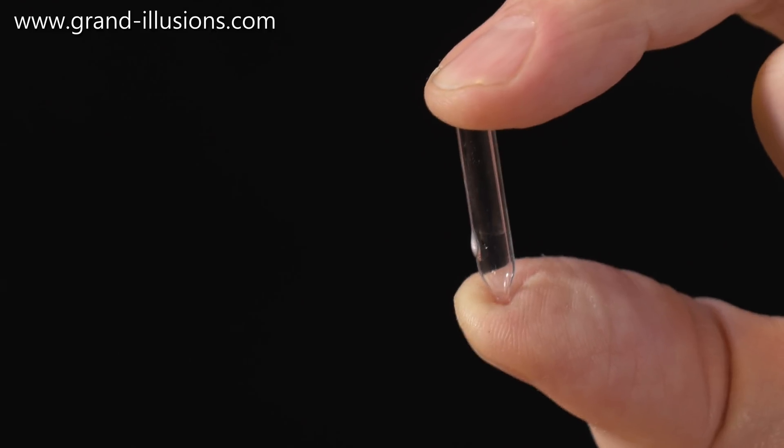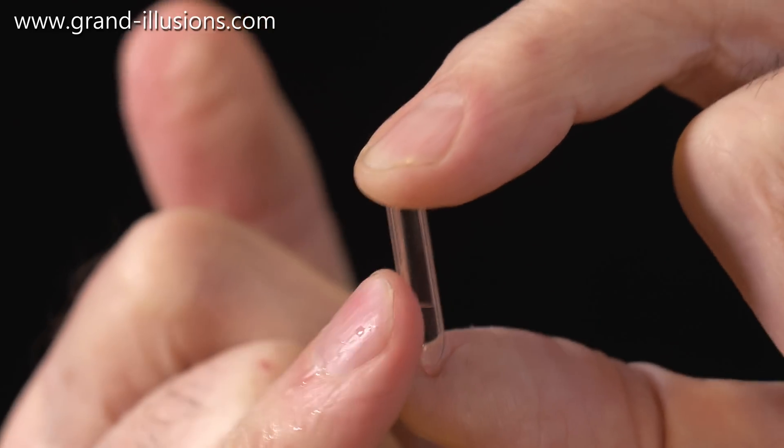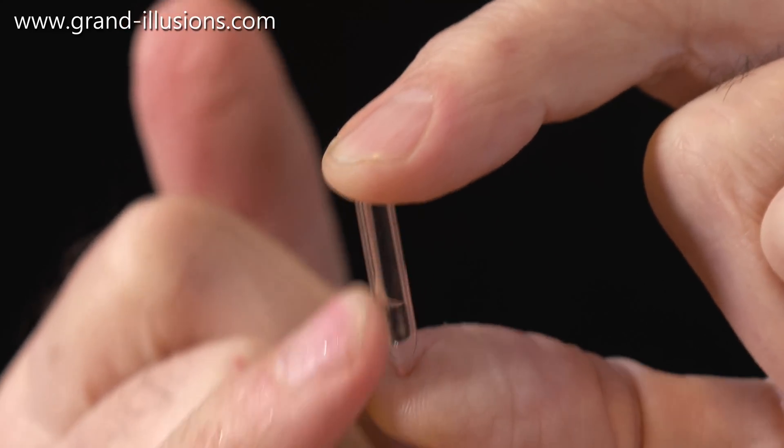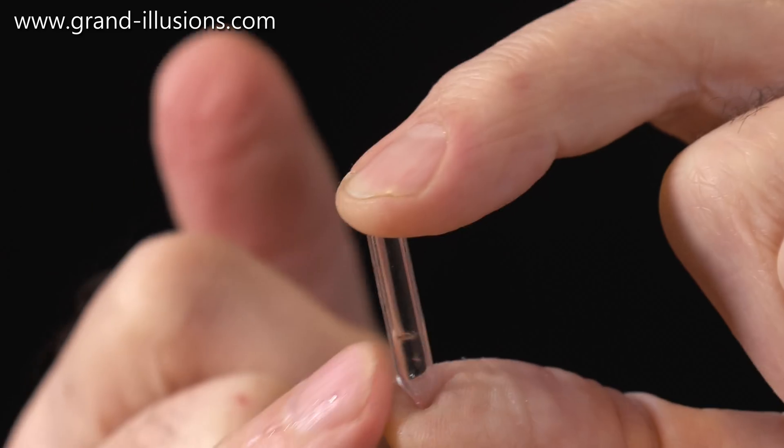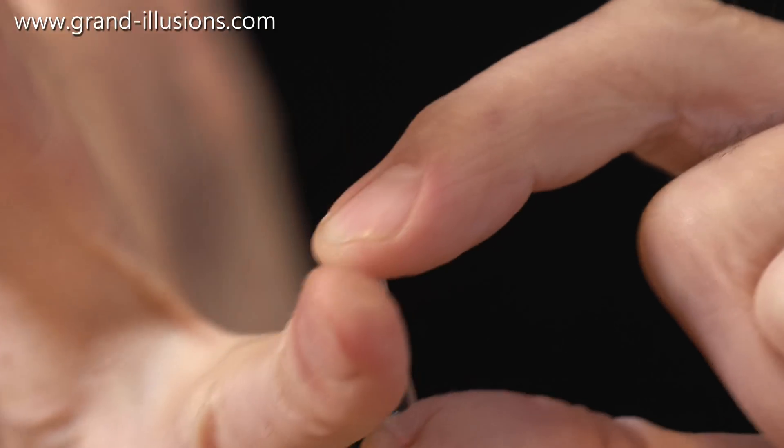So to make it disappear I've got to warm it up. So I'll use my little finger, which is not quite so cold. It's always slightly cold, but I can still see a little bit of the liquid, so try along there.